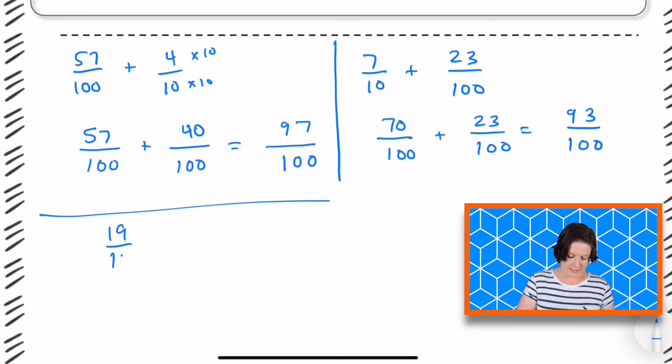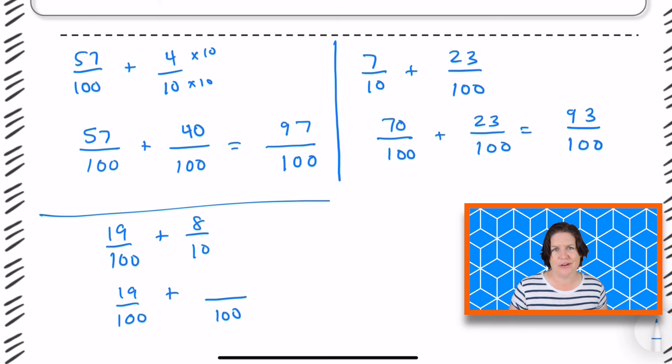Okay. For the final one, we have 19 hundredths plus 8 tenths. Notice I'm not doing this in my head. I'm actually using my workspace. You'll have plenty of workspace on your fast test. So make sure you're using it. There's less of a chance that you'll make a little mistake if you write it down, jot it down, show your journey on paper. Okay. When we add or subtract, our denoms must match. So we're going to change 8 tenths. Let's keep 19 hundredths because that one already has a denominator of 100. We're going to change 8 tenths into how many hundredths?